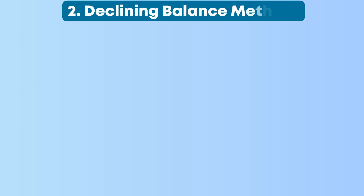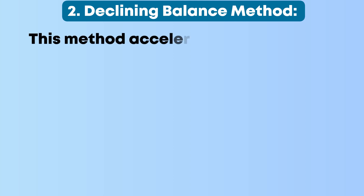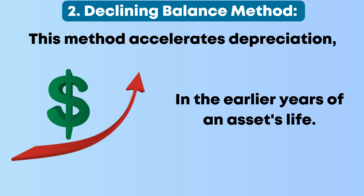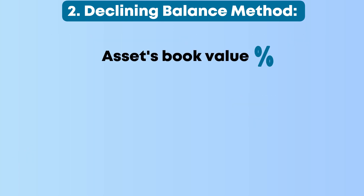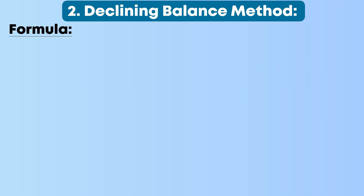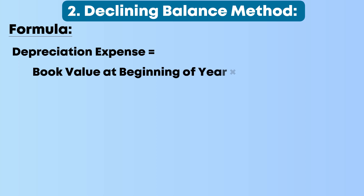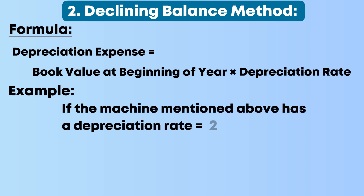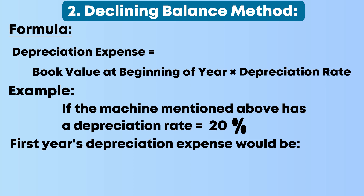2. Declining balance method: This method accelerates depreciation, allocating a higher expense in the earlier years of an asset's life. It uses a fixed percentage of the asset's book value at the beginning of each year. The formula is: Depreciation Expense = Book Value at Beginning of Year × Depreciation Rate. For example, if the machine has a depreciation rate of 20%, the first year's depreciation expense would be: $10,000 × 0.20 = $2,000.